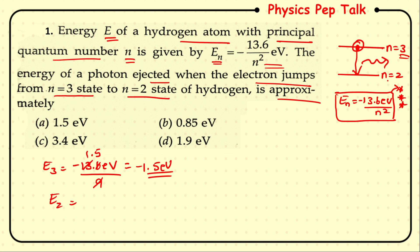Similarly, for the second energy level n = 2: E₂ = −13.6 eV / 2² = −13.6 / 4 = −3.4 eV.